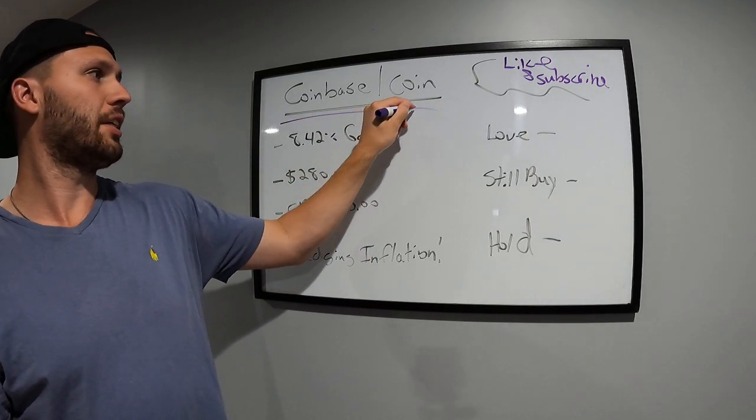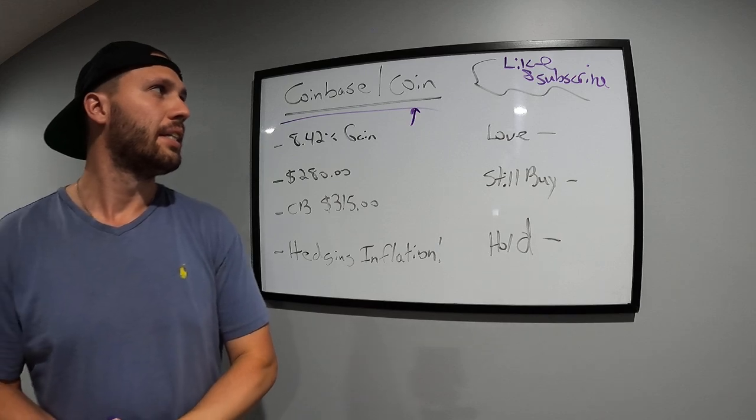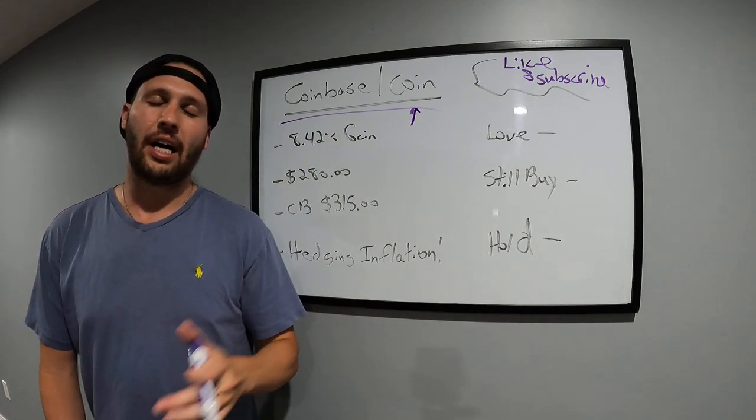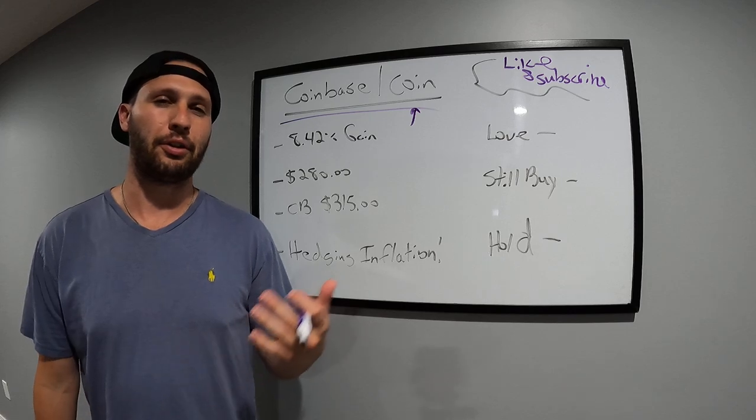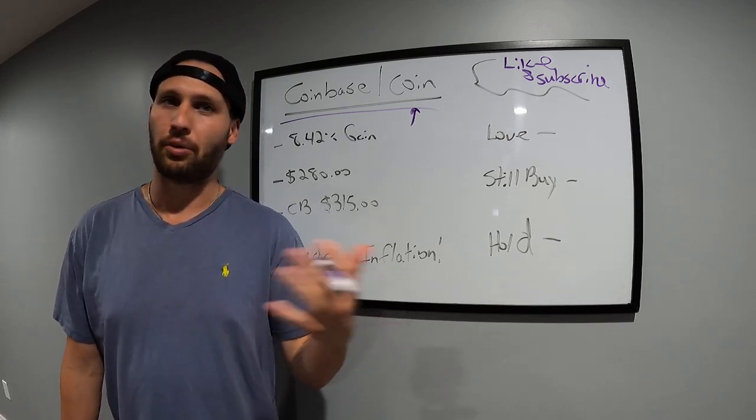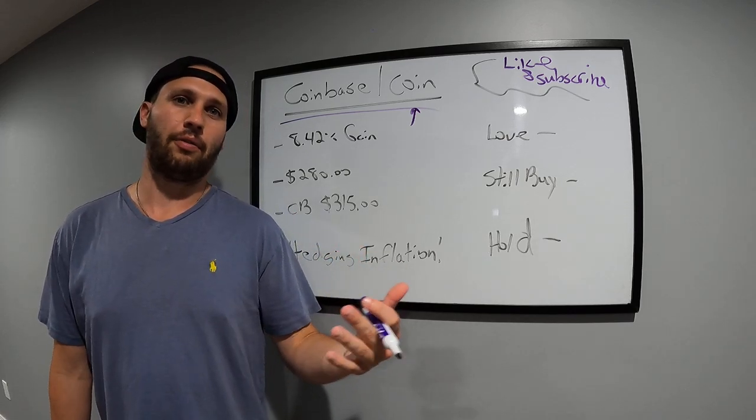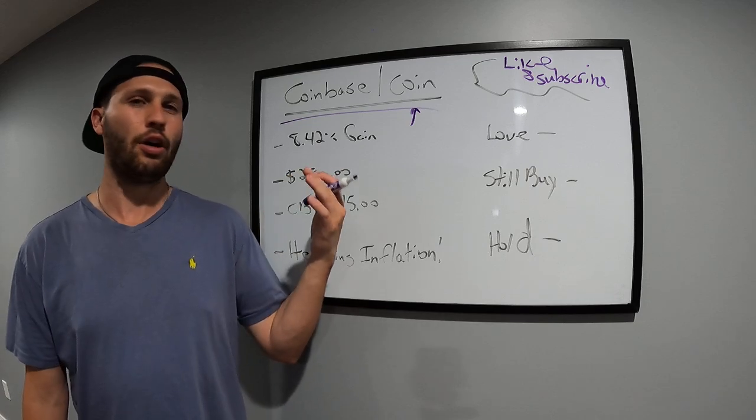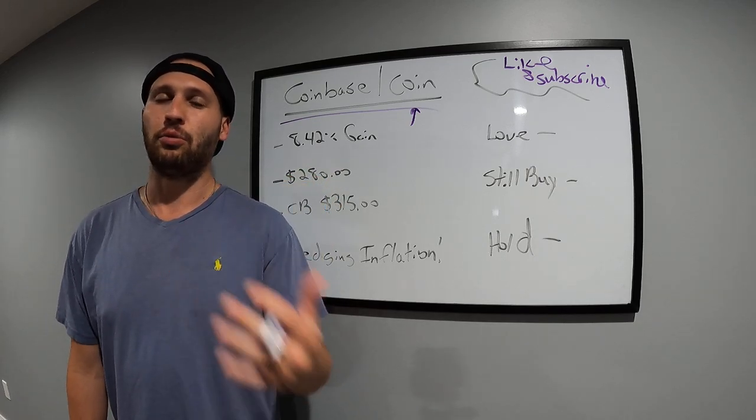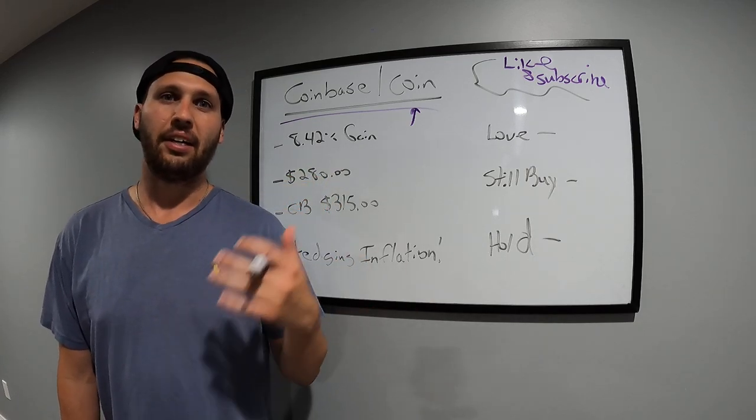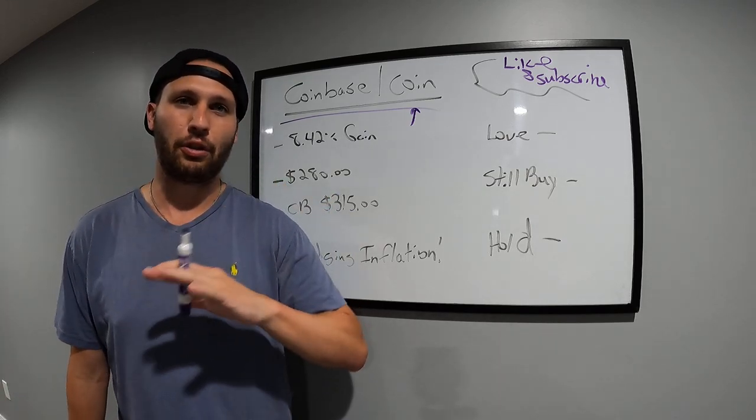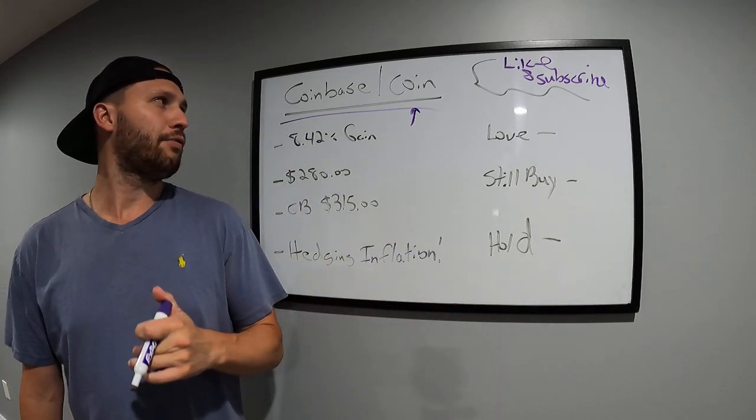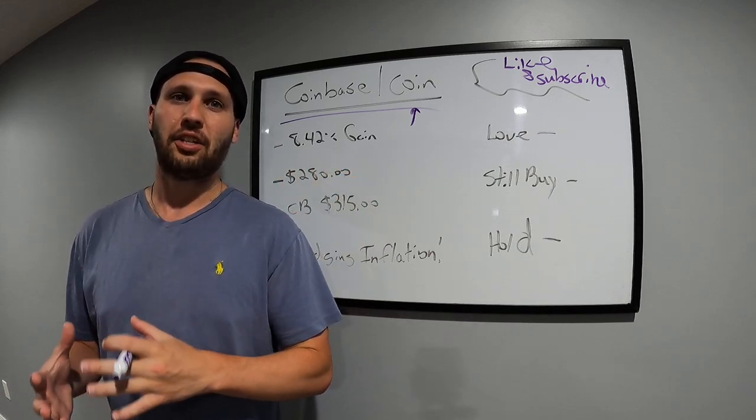Today I want to talk about Coinbase, ticker is COIN. This is a stock I actually bought when it IPO'd. I missed the DoorDash and Airbnb IPO. I thought they were going to correct or go down because they were a little overvalued but they did the exact opposite. So I kind of got FOMO and coinbase IPO. I do believe in the business model, I do like the management team, I do believe in crypto and all that stuff for long term.